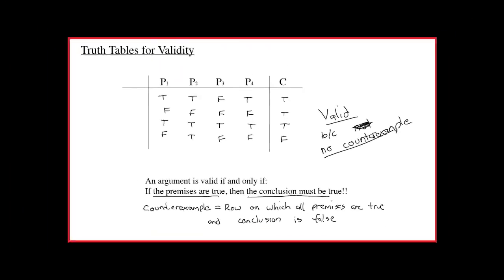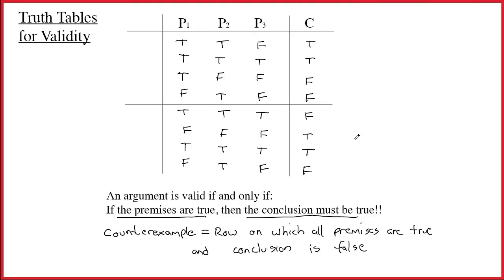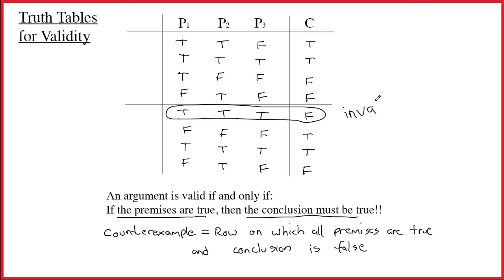This time we have an eight-row example, rearranged to fit. Three premises, one conclusion. Looking for a counterexample: on the fifth row, all the premises are true and the conclusion is false. Always circle the counterexample. If you find a counterexample, the argument is invalid. None of the other rows interest us — we are looking for violations of the definition of validity.